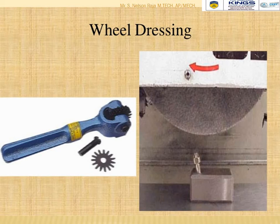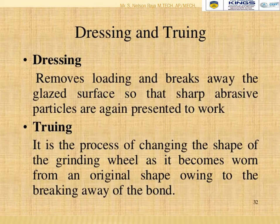Wheel dressing improves the cutting edge of a grinding wheel. Dressing removes loading and breaks away the glazed surface so that sharp abrasive particles are again presented to the work. Truing is the process of changing the shape of a grinding wheel as it becomes worn from its original shape by the breaking away of bond.